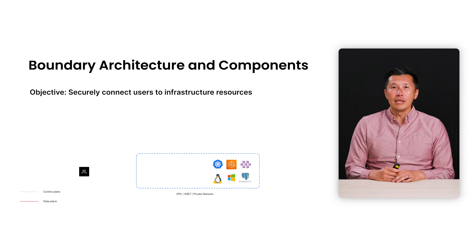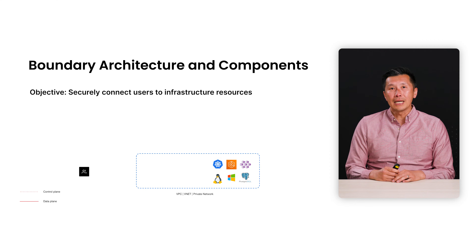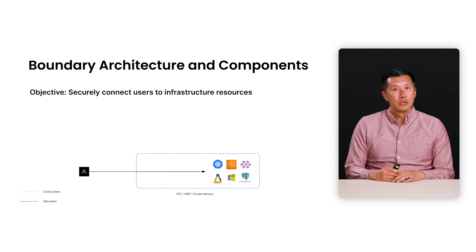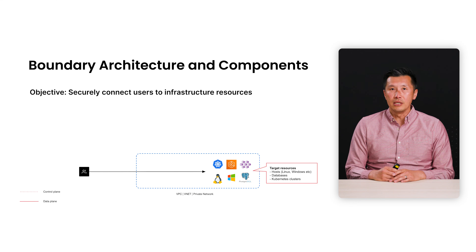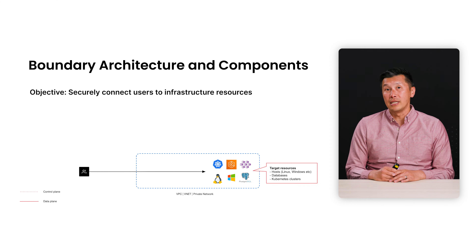First, let's start with the objective of what we're trying to achieve. We're trying to securely connect a remote user to their desired infrastructure resources. These resources are referred to as targets, and they could be various types of VMs, OSs, hosts, Kubernetes clusters, and databases.